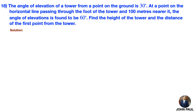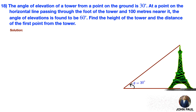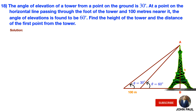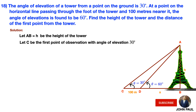Solution. A person from the ground sees the top of the tower at an angle of 30 degrees. He then moves towards the tower by 100 meters and looks at the top of the tower, which now makes 60 degrees. Let AB equal to H be the height of the tower. C is the first point of observation with angle of elevation 30 degrees, and CD equals 100 meters.